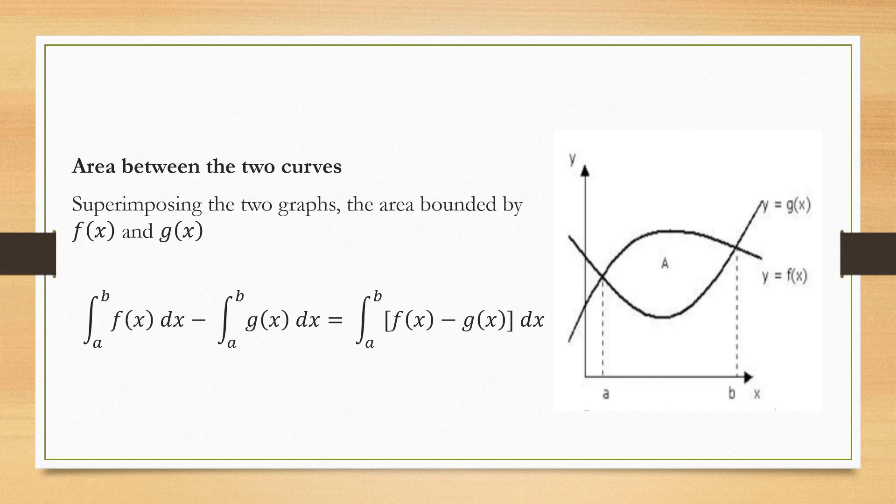So first integral a to b f(x) dx minus integral a to b g(x) dx is equal to integral over a to b f(x) minus g(x). So find the individual area and then subtract it and you get your intersected area.